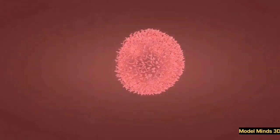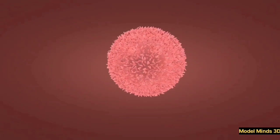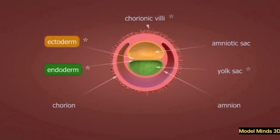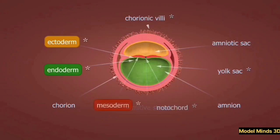Once implantation is successful, the body begins producing hormones to support pregnancy, such as human chorionic gonadotropin, or HCG, which is what pregnancy tests detect.